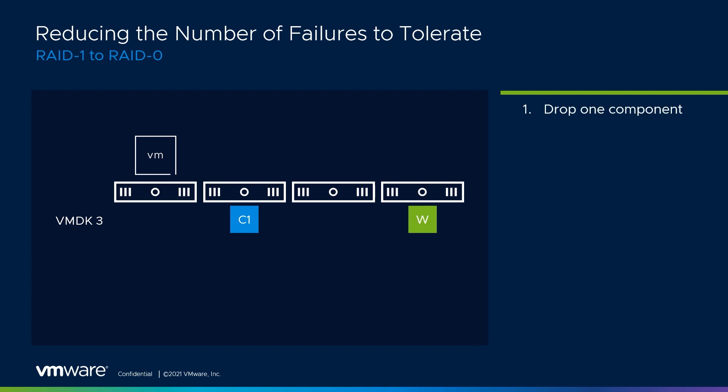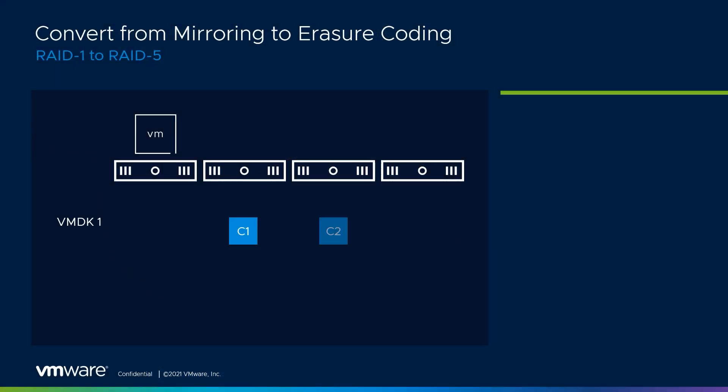Wrapping up this video, we walked through two different types of policy changes. The first was going from RAID1 over to RAID0 — all we had to do was delete one data component and one witness component. Our second example was going from RAID1 over to RAID5, which had extra storage considerations because we had to build a brand new RAID5 object to re-sync our data to — so making sure we had enough slack space in the environment to complete that operation.